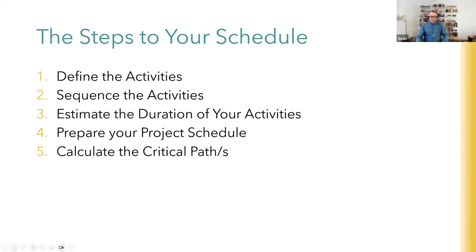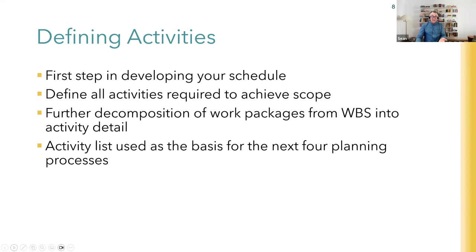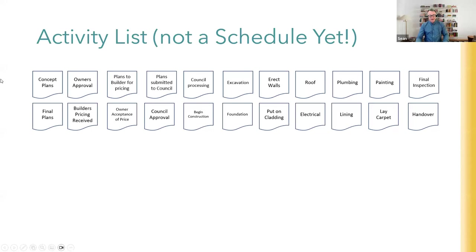Starting at the top: defining activities. We're going to look at our scope statement and our work breakdown structure and do further decomposition down to activity level. For activities we can break down to activity level we'll have a great deal of certainty about duration; for those we can't, planning will have higher uncertainty. The first thing we want to do is create an activity list. Here's a generic example of what an activity list may look like for a house building project - imagine each one of these is a post-it note on a wall somewhere.